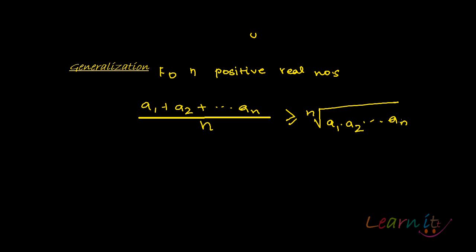So this is a generalization of the very famous inequality that is your arithmetic mean is always greater than or equal to geometric mean, and we have seen why. So let's continue.